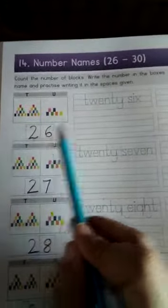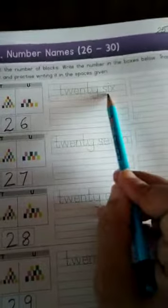Aap ko samjha hai. Pahle blocks ko count karke unit sentence ki place mein likhna hai. Then jo bhi number count karke aata hai, us ki spelling likhni hai. Pahle di hui spelling ko trace karna hai, aur baad mein bache hui columns mein usko likhna hai. Is that clear?